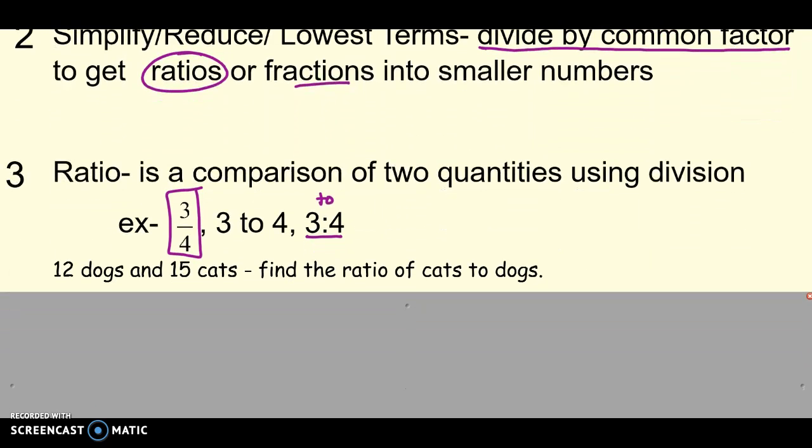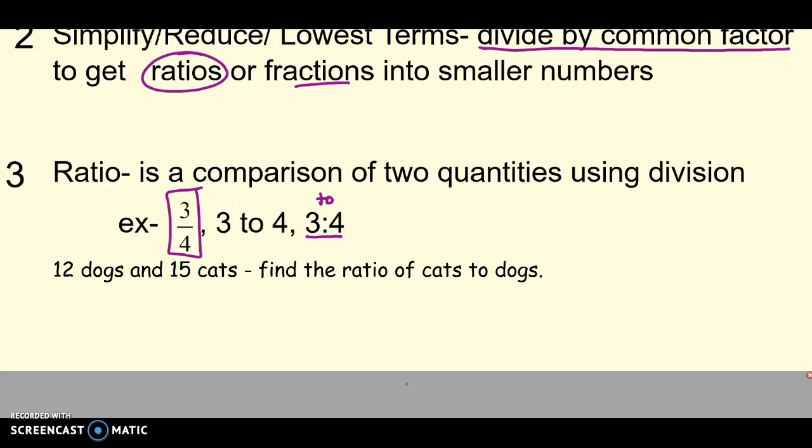Here's an example. Twelve dogs and fifteen cats. Find the ratio of cats to dogs. Well, whatever order they list it in, that's the order I need to put the numbers in. So it looks like fifteen cats and twelve dogs. So there's my ratio. But any time we write a ratio, just like with fractions, I should simplify or reduce it. So think of what goes into fifteen and twelve. I think three goes into both of them. So divide them both by three. Fifteen divided by three and twelve divided by three. That would be my simplified ratio of cats to dogs - five to three.